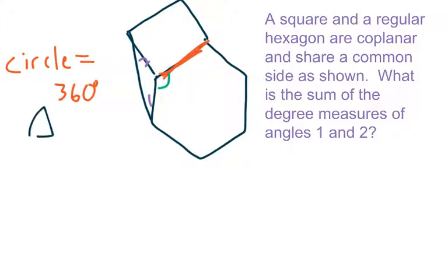And then we know a triangle equals 180 degrees. So all three of these angles should add up to 180. Well, how do we start this? Well, I know a circle is 360, so I'm going to find out what these angles are.